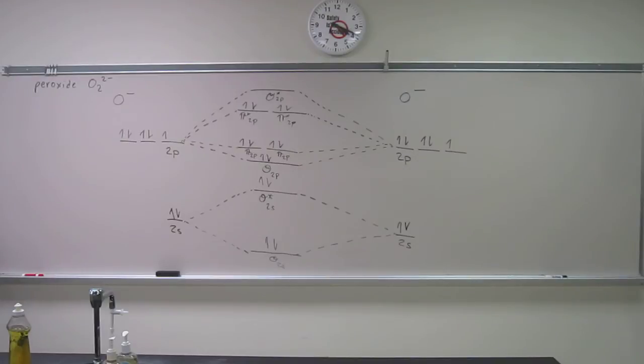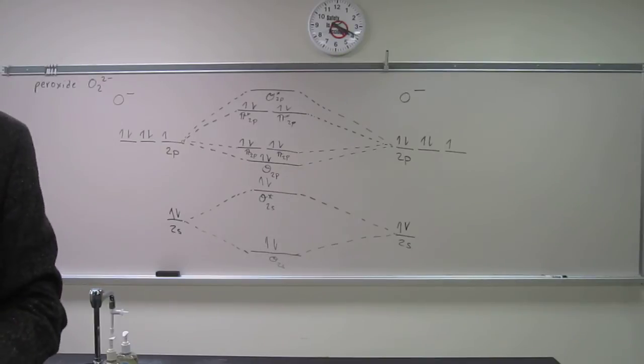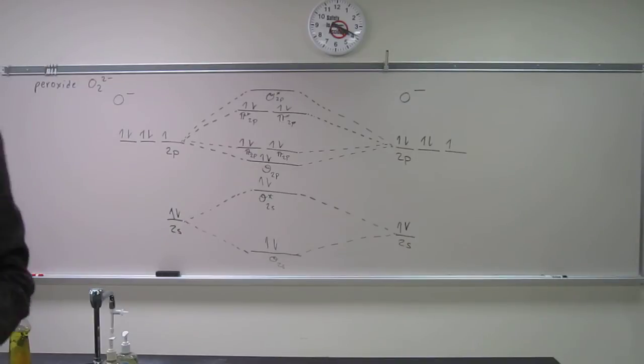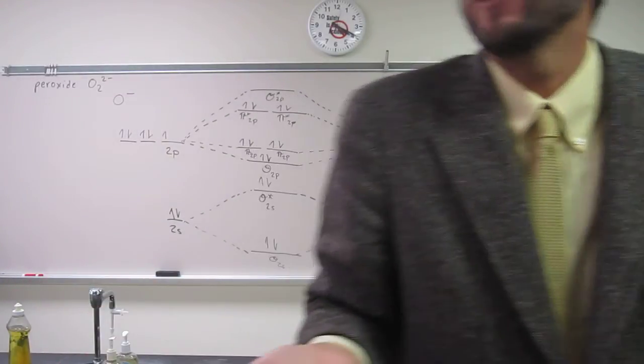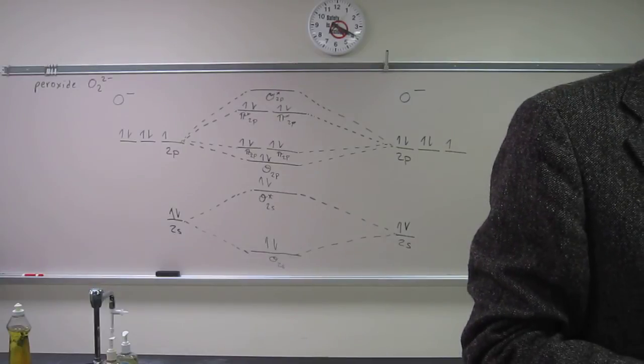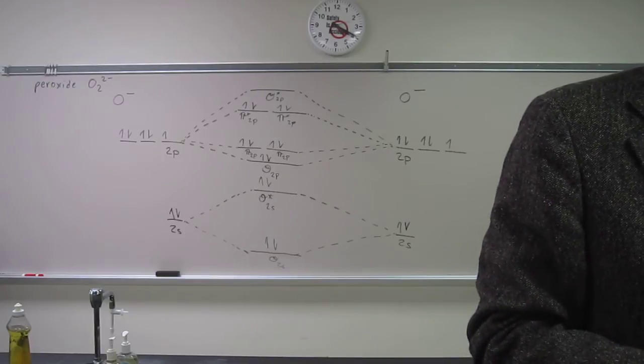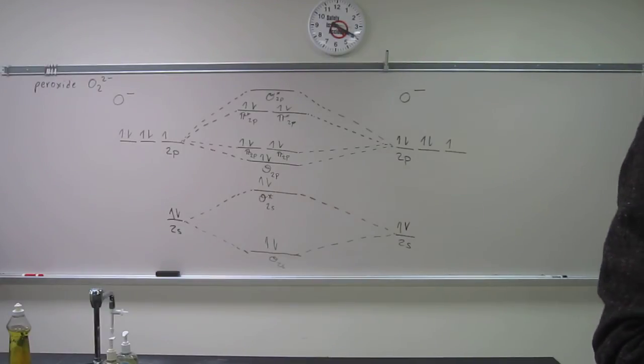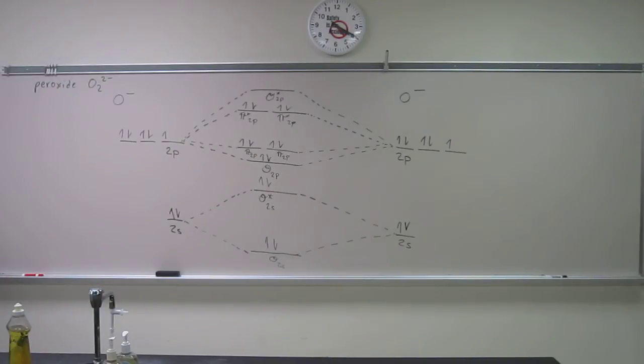So would you expect this polyatomic ion to be stable enough to be formed? You've got to figure out what the bond order is, right? But we know that peroxides exist. So we should hope that we get a bond order that's greater than zero. And the superoxide we figured out was 1.5, if I remember correctly.